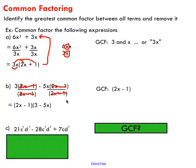To check the answer: take the common factor (2x minus 1) and multiply by 3 — that gives you 3 times (2x minus 1), which is what we had originally. Then multiply (2x minus 1) by negative 5x and you get negative 5x times (2x minus 1). So our factored expression must be correct.